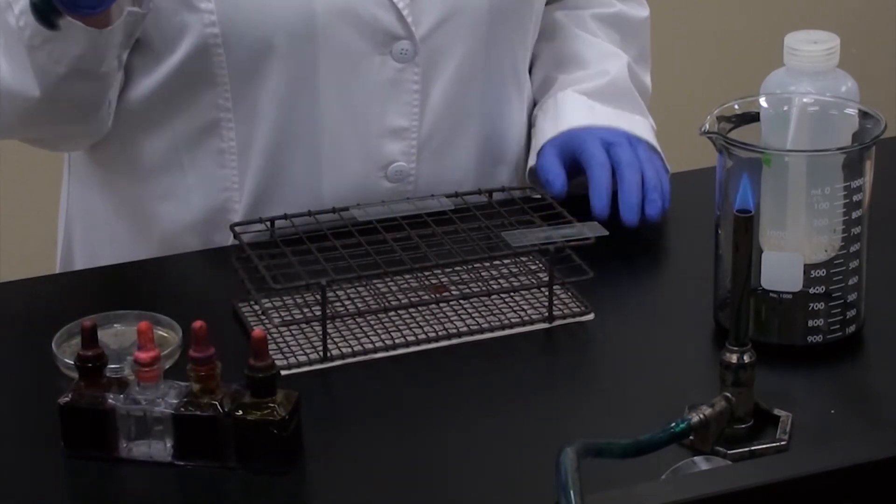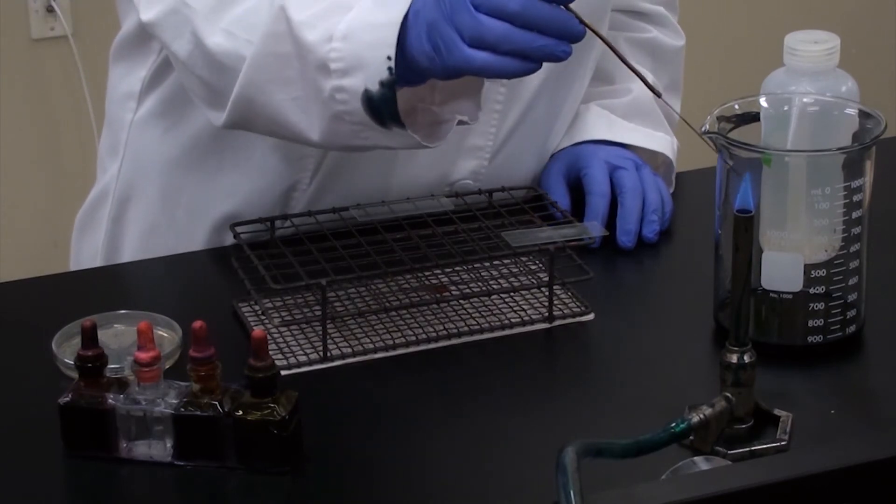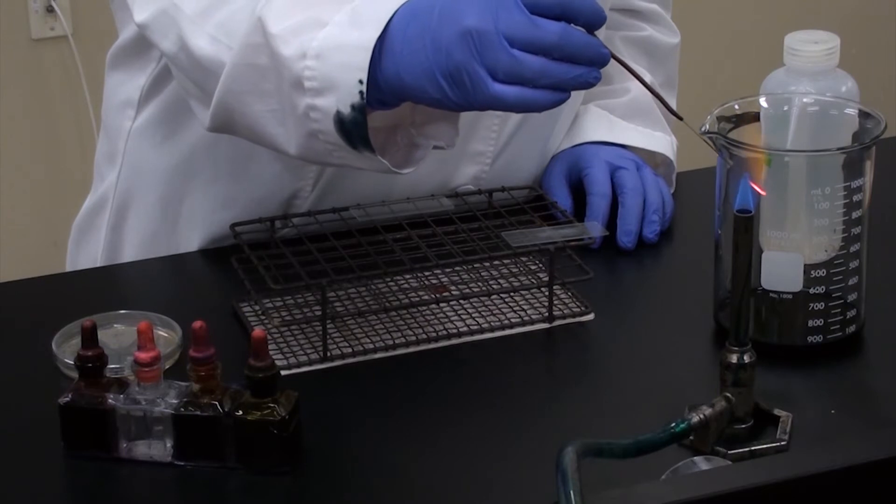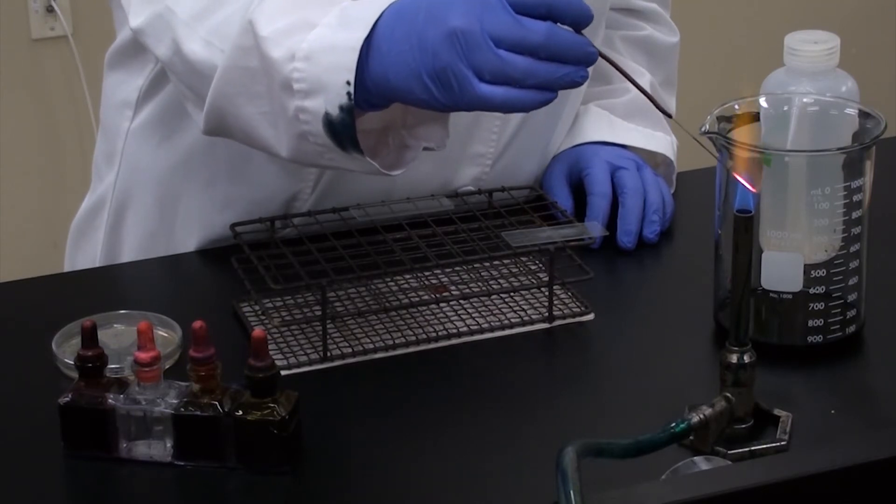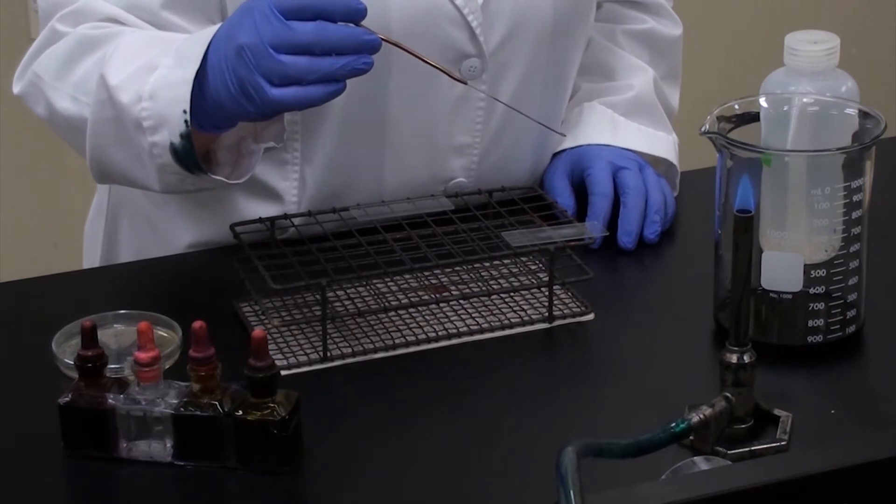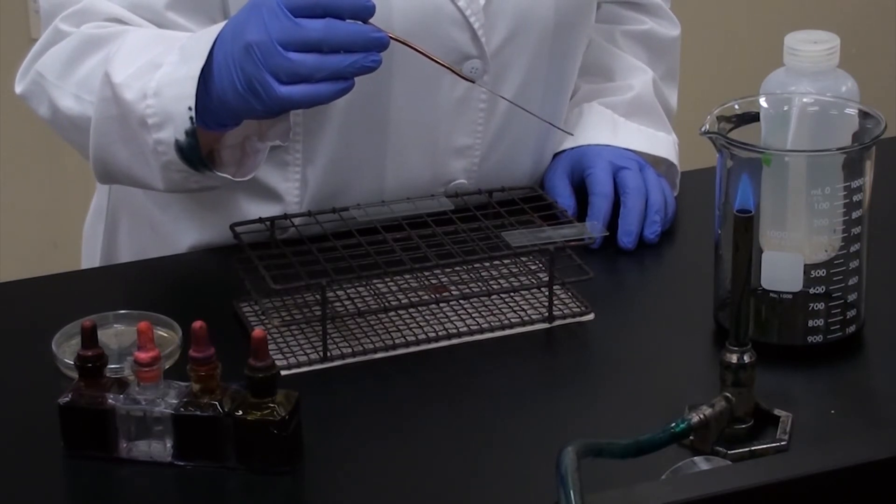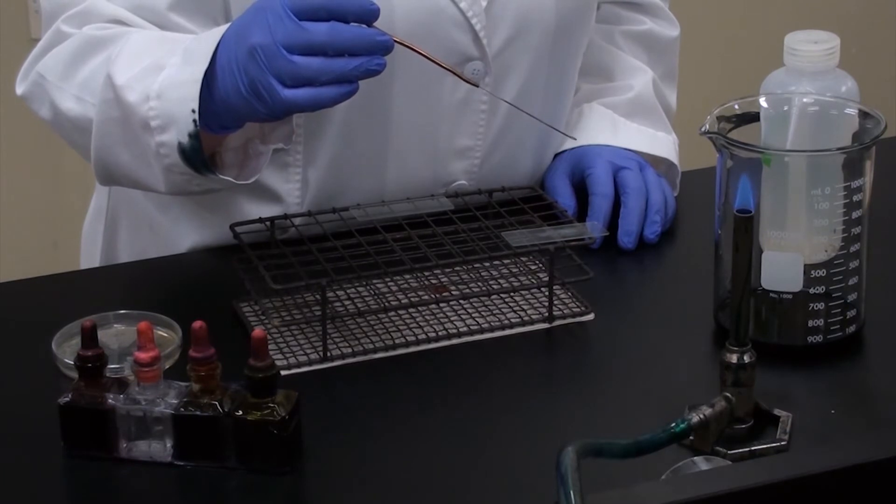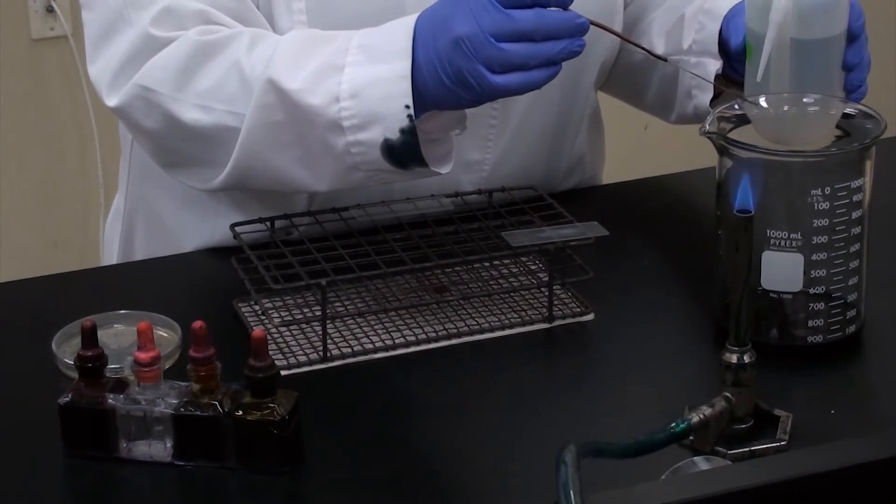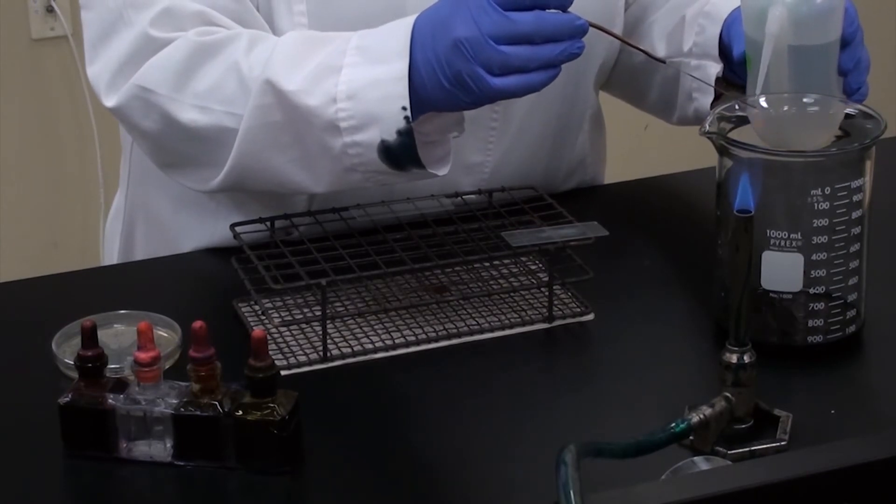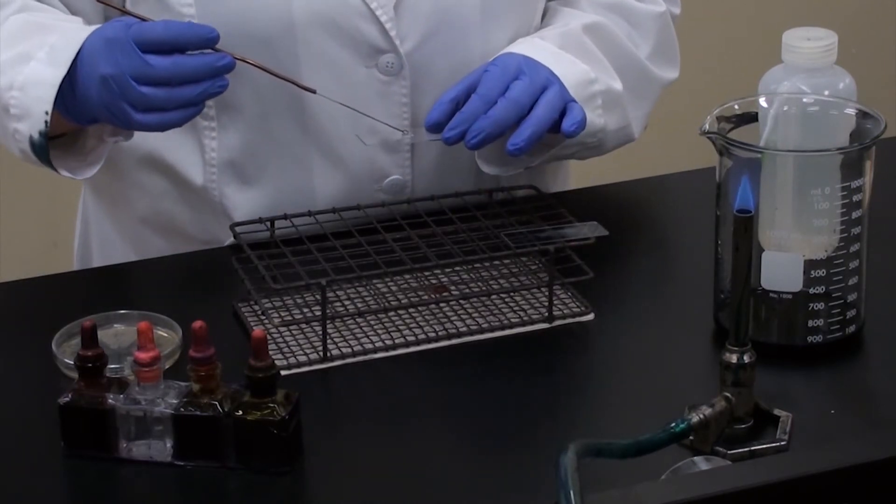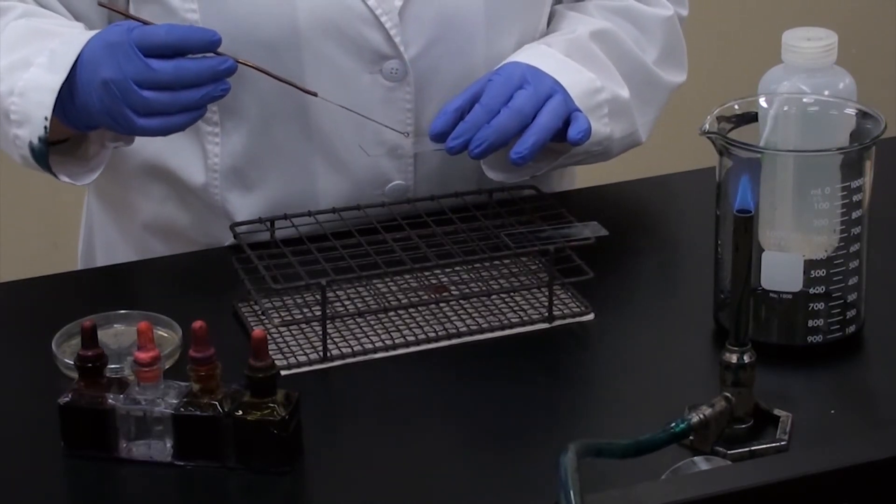All right, so the first step is to transfer organism to your slide. So as always, I'm going to aseptically transfer over some water by flaming my loop. Just like with a simple stain, I'm going to transfer over a single droplet of water to my slide and spread it around a tiny bit.